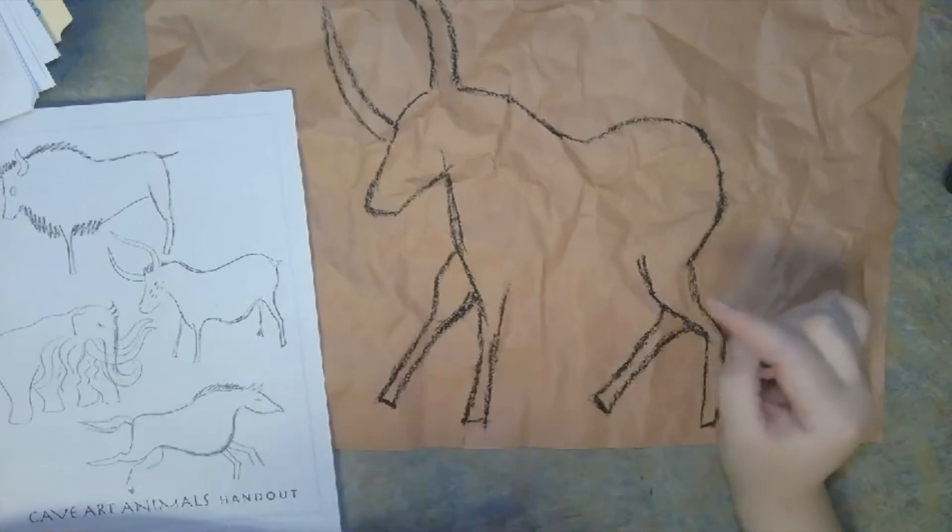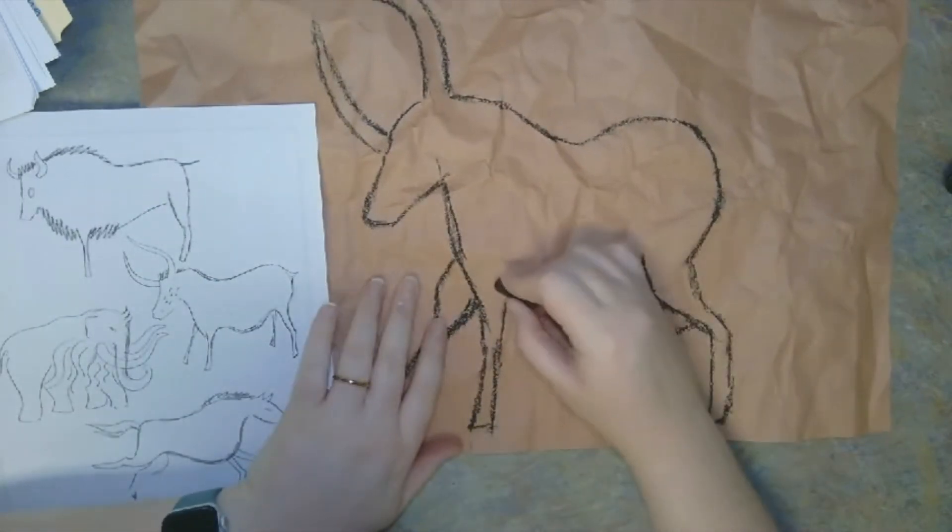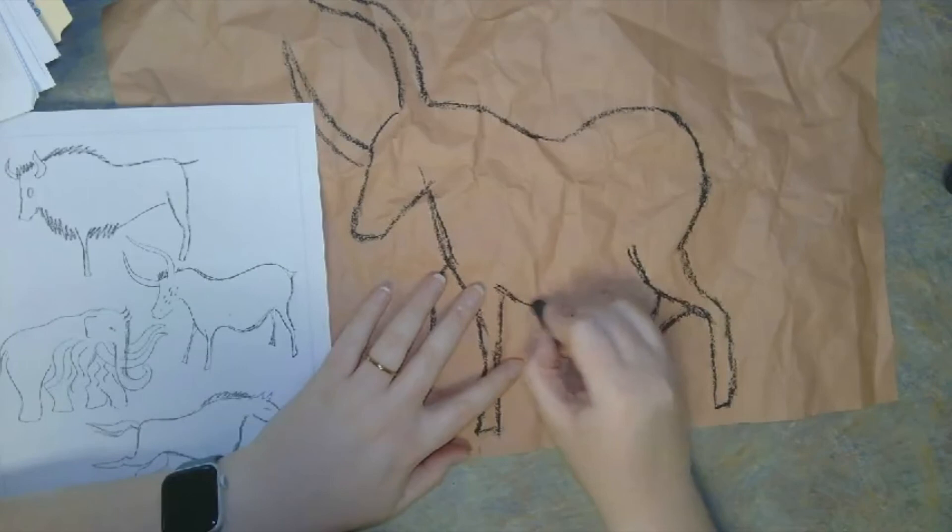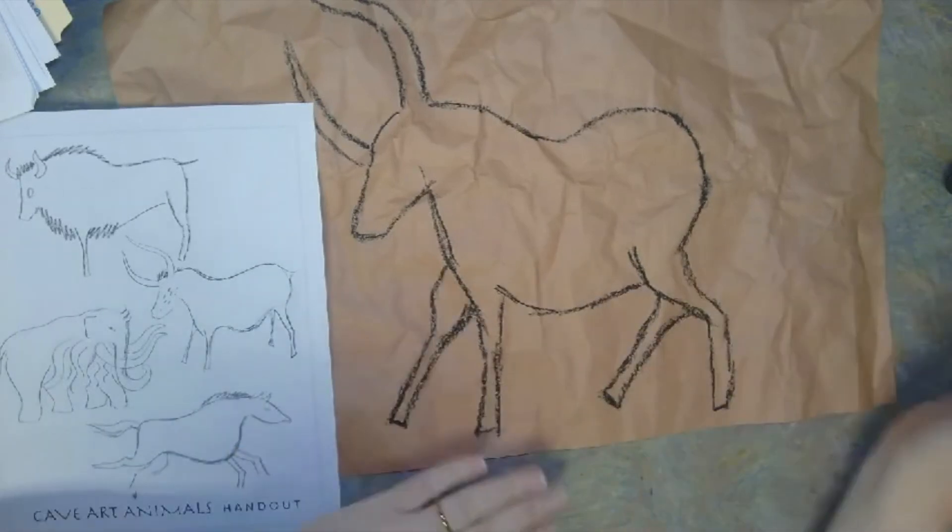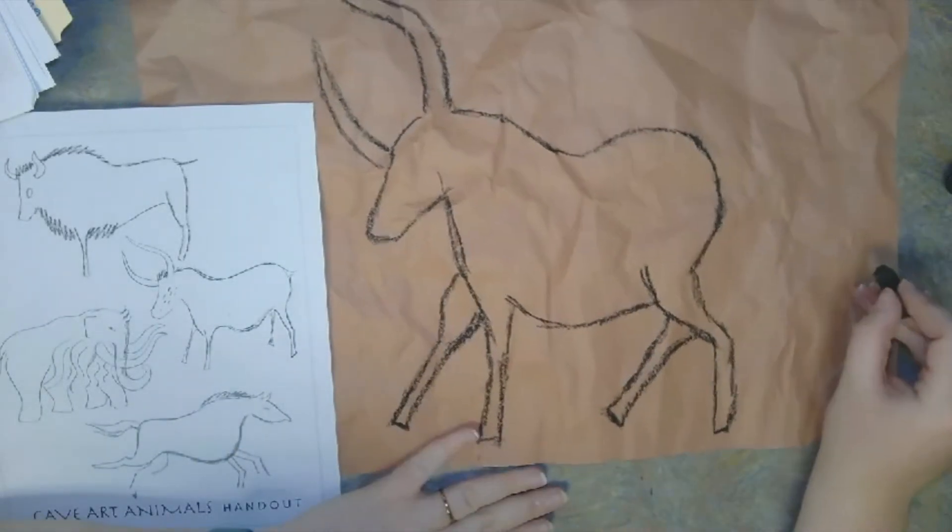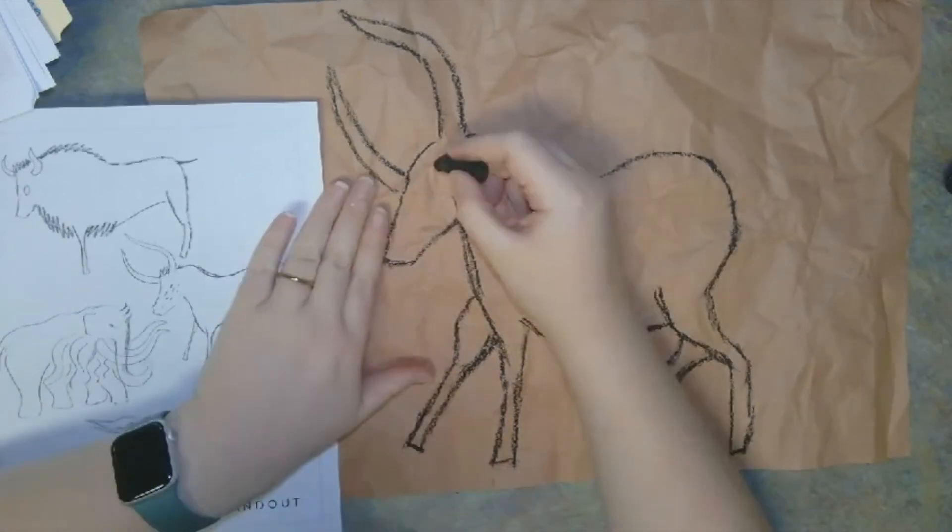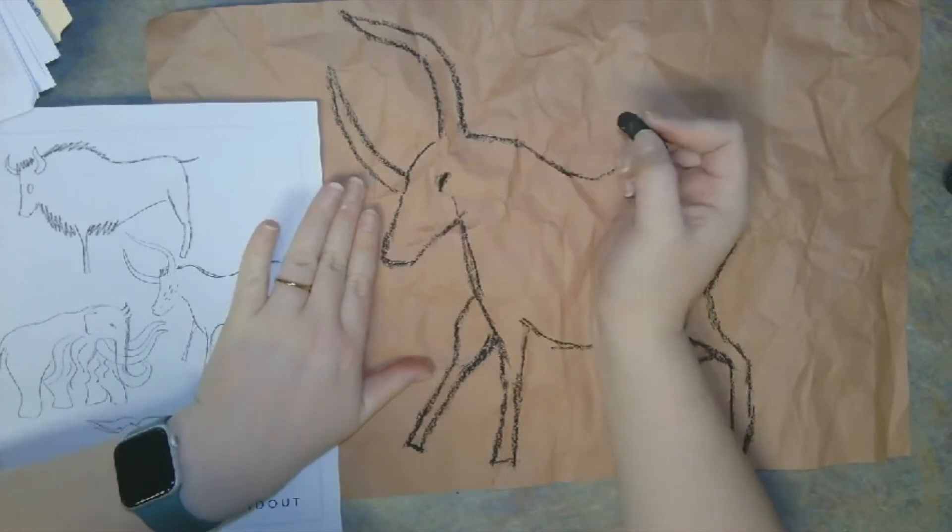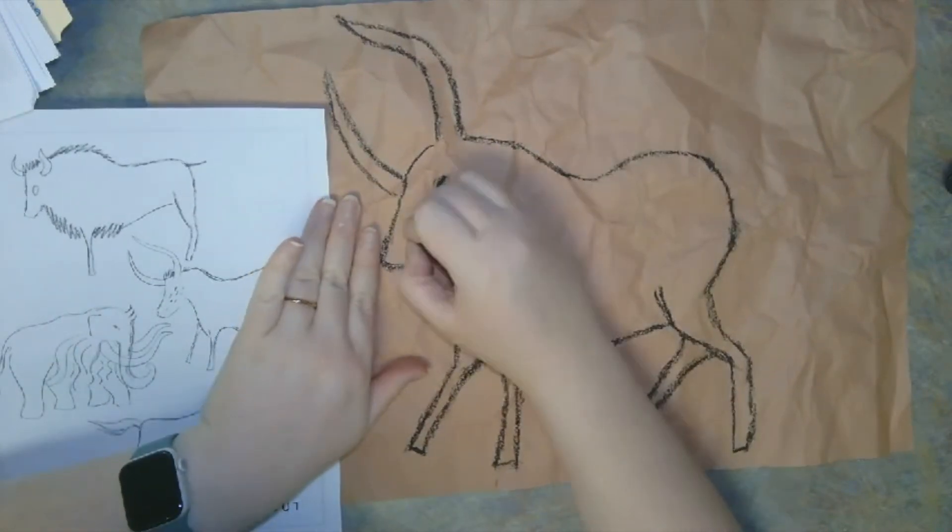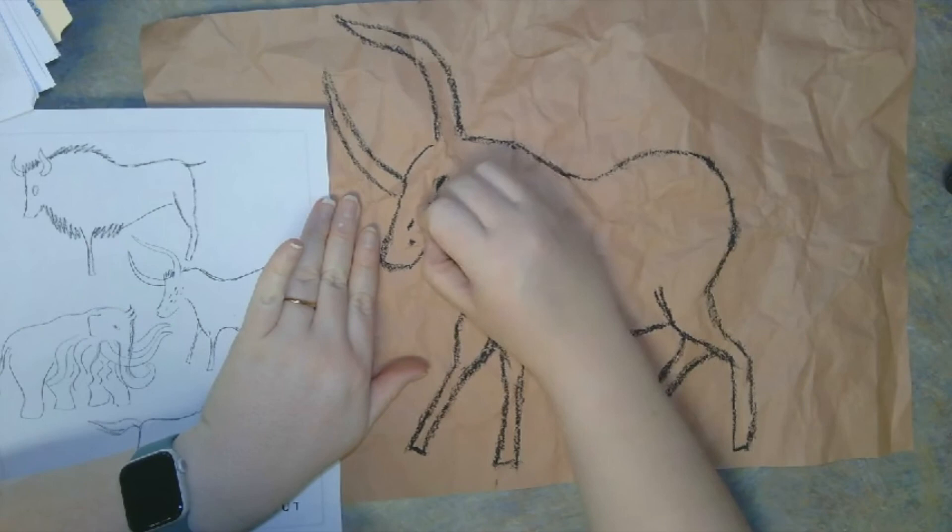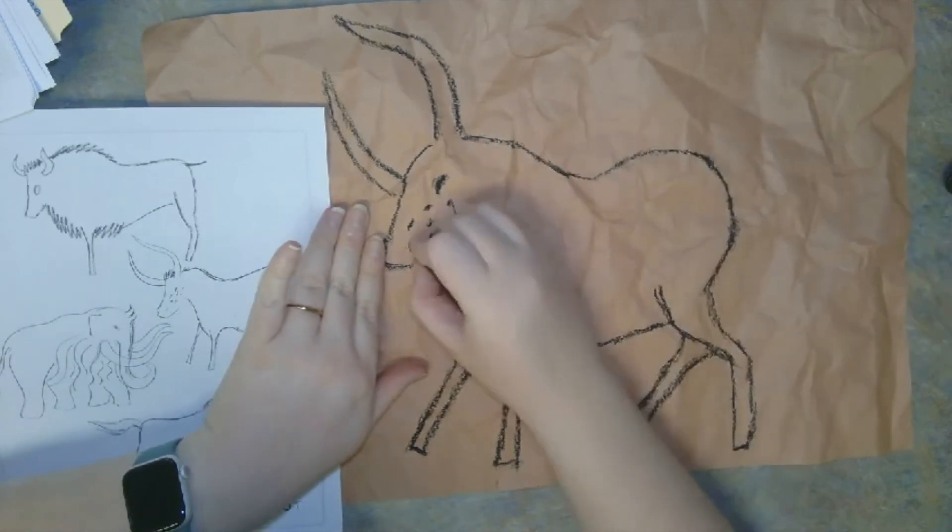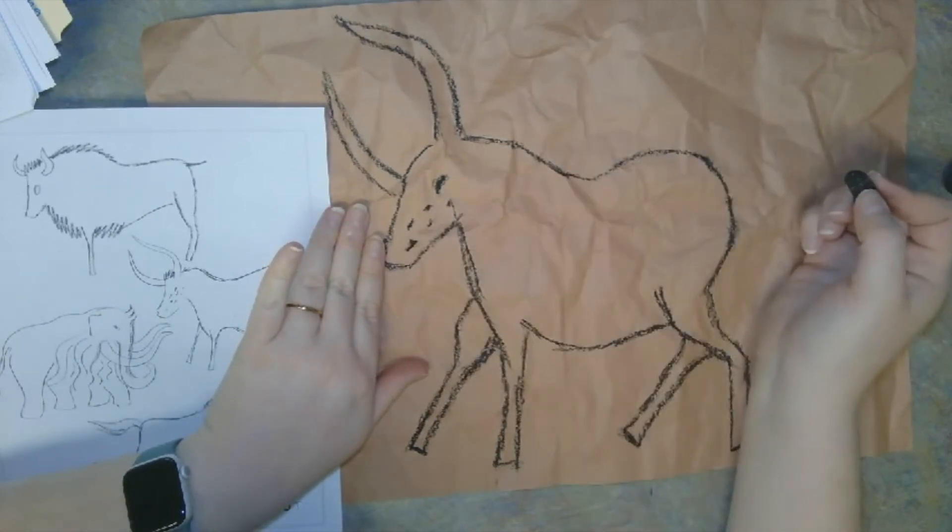Now we are almost done with the drawing portion. The next thing we need to do is connect the front leg to the hind legs. This is going to be the bull's stomach. I'm going to use my oil pastel to add an eye wherever I think it should be and maybe some little markings along the face. Great job everyone.